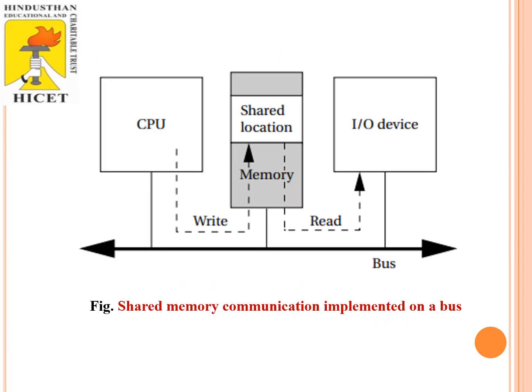Let's have a glance at a shared memory communication implemented on a particular bus. There are two important components: one is CPU and the other is the input-output device. Both share the data through a shared memory location. The CPU wants to write the data to a particular memory by selecting the address location, and finally it intimates to the input-output device to read that certain location. This is how the shared memory communication takes place. Let's have a detailed view in the forthcoming slide.